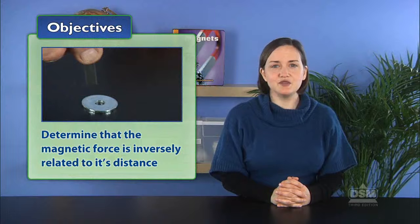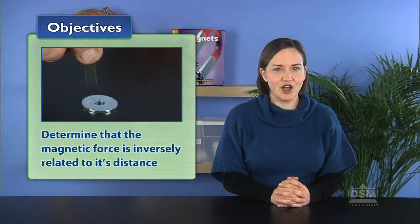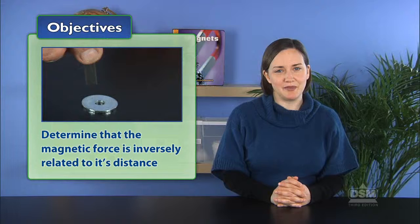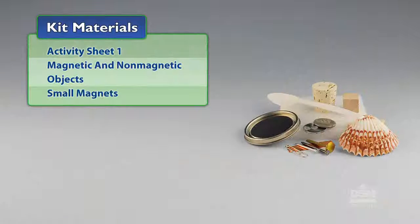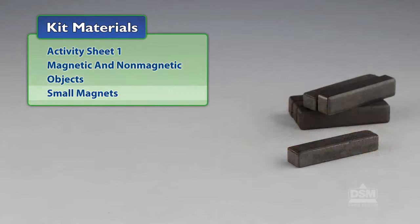Students then determine that the force of a magnet acting on a magnetic object is inversely related to the magnet's distance from that object. You will need the following materials from the kit: Activity Sheet 1, Magnetic and Non-Magnetic Objects, and Small Magnets.